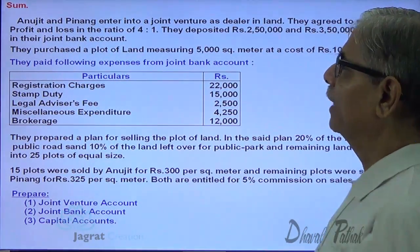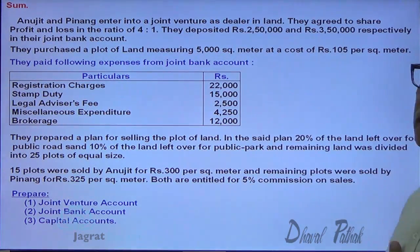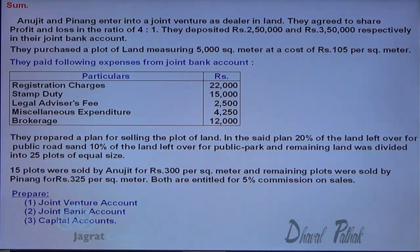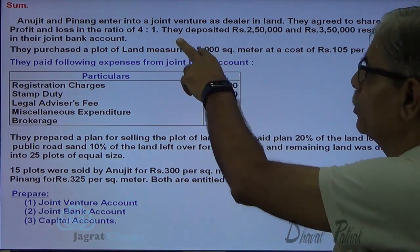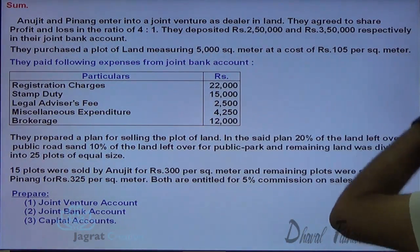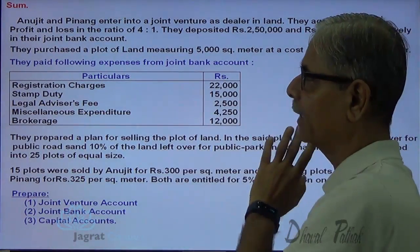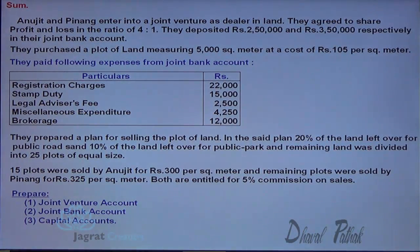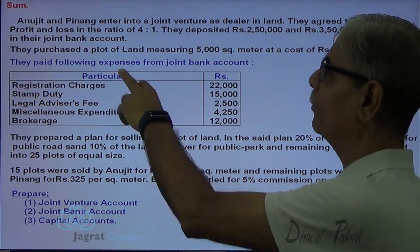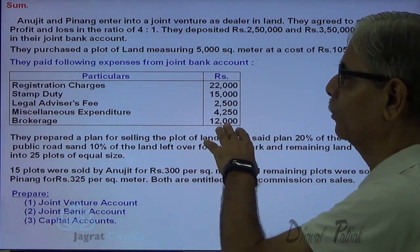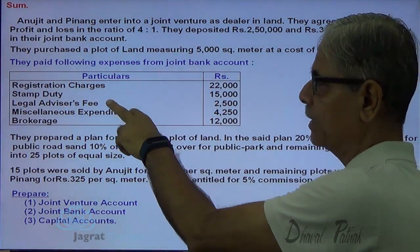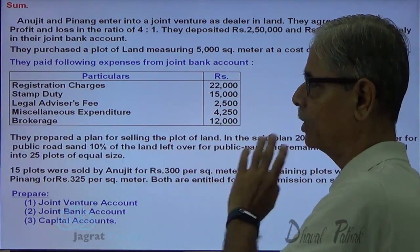Anujit and Penang entered into a joint venture as dealers in land. They agreed to share the profits and losses in the ratio of 4 to 1. They deposited 2,50,000 and 3,50,000 respectively in the joint bank account. They purchased land measuring 5,000 square meters at a cost of rupees 105 per square meter. They paid the following expenses from the joint bank account: registration charges, stamp duties, legal advisor's fee, miscellaneous expenditure, and brokerage.